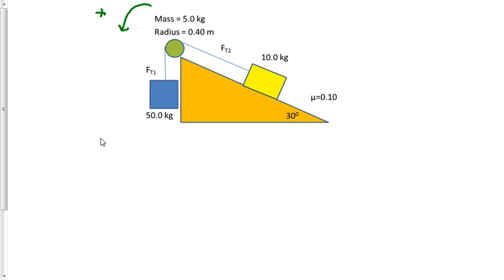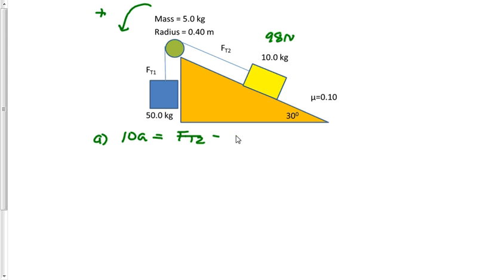Let's go ahead with Equation A, which will deal with the 10-kilogram box. We know that 10 times 9.8 is 98 Newtons. We have force tension 2 pulling it up, and then force gravity x and force friction both opposing that motion up. Net force equals mass times acceleration, so: 10A = T₂ − 98·sin(30°) − 98·cos(30°) × 0.10. This covers net force, force tension 2, force gravity x, and force of friction.